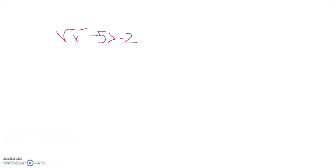We are going to try and figure out when square root of x minus 5 is greater than negative 2. The first thing I'm going to do is add 5 to both sides to get that square root all alone. Negative 2 plus 5 is 3.